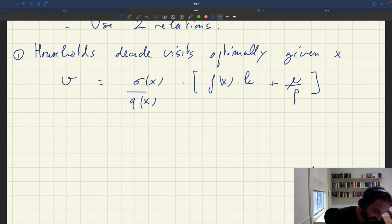This basically gives us a first relation between V, the number of visits, and X, the tightness. And this is basically an aggregate demand relationship because it comes from households deciding how much they want to spend.